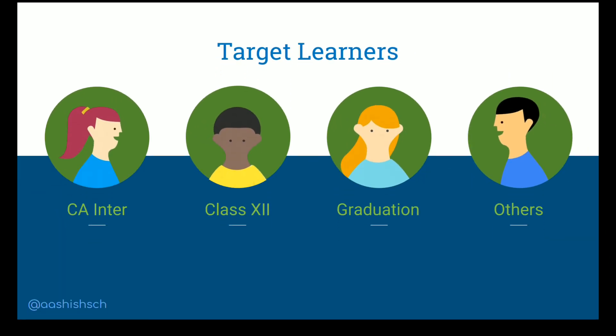The target learners for this course are CA Intermediate people, class 12th students, and graduation students. If you are someone who wishes to learn about national income, you can also watch this course. This course focuses on CA Intermediate people and class 12th students who have economics, as well as graduation students who have national income in their syllabus. And if you simply wish to learn how national income and its related aggregates are computed in our country, you can watch this course as well.